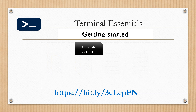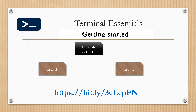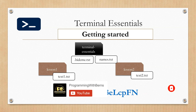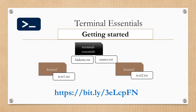When you have this file, you will see that we have a directory called Terminal Essentials, another directory inside Terminal Essentials called Lesson One and Lesson Two. Inside Terminal Essentials we have a file called dot heightme.txt, another file called names, a file inside Lesson One called text1.txt, and a file in Lesson Two called text2.txt. You can pause this video and create these files on your computer, or you can just download it.